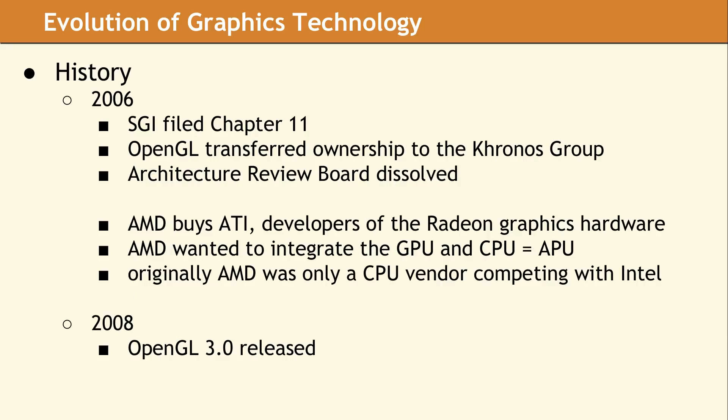A few years later, Direct3D version 9 was dominating the market, and development on OpenGL appeared to be dying. Developers using OpenGL were frustrated with SGI. There was hope that after two years of inaction the OpenGL API would finally be updated. But the company was having its own internal problems, and at the SIGGRAPH conference in 2006, announced the Khronos Group would become the new maintainers of OpenGL.